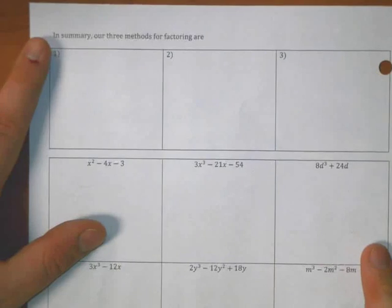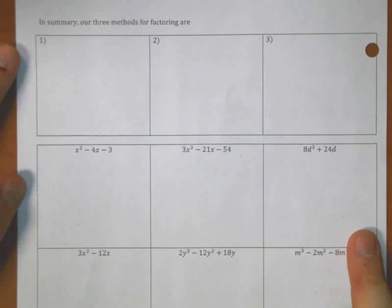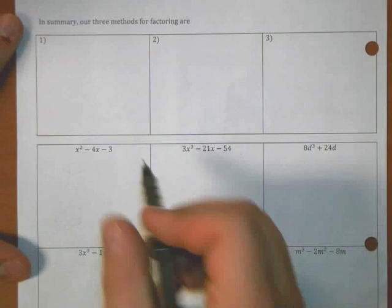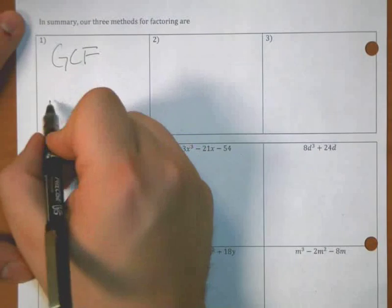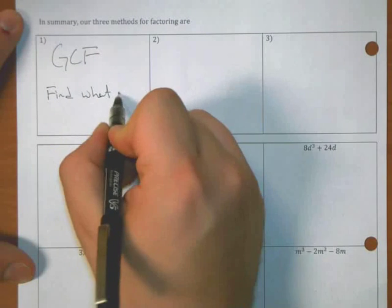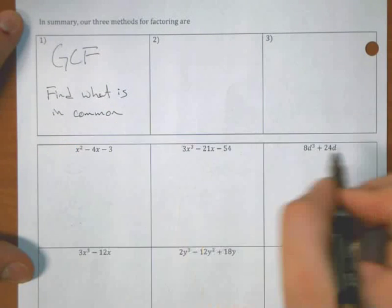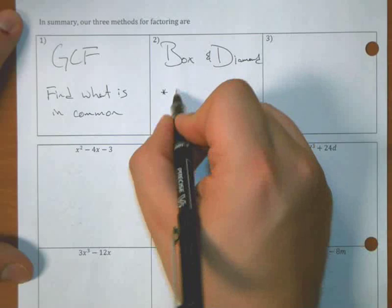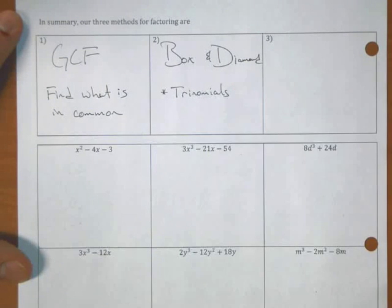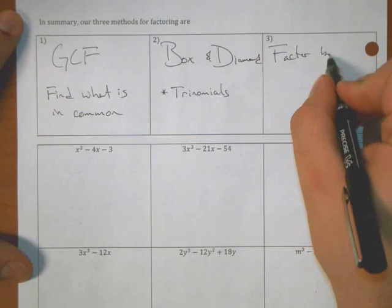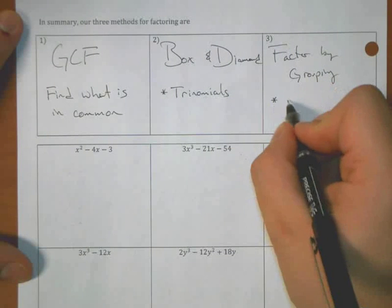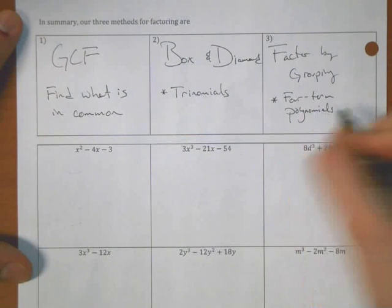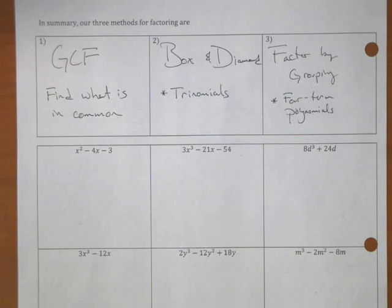The examples on the back side tie together the three factoring methods we've had. In summary, we've got GCF, find what's in common. We've got box and diamond. We use this guy for trinomials. And we have factor by grouping. We use this guy, this is what we did on the front side. We generally use them for four term polynomials. So down below are nine examples that have some curious twists to them. I'm going to try to factor these as best as possible.